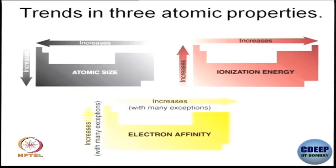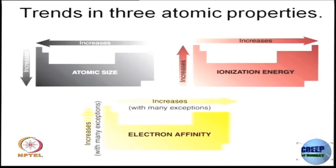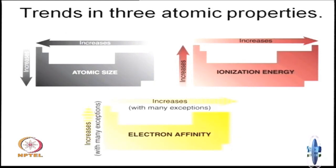To summarize the trends in free atomic properties: atomic size decreases from left to right and increases from top to bottom. Ionization energy increases from left to right and decreases from top to bottom. Electron affinity increases from left to right and decreases from top to bottom. That is all for today.